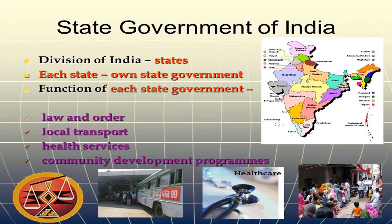Now we will talk about the State Government of India. It is not possible for the Central Government of India to look after each and every process. That is why the Constitution of India divided India into different states. Right now we have 28 states, so there are also 28 governments.